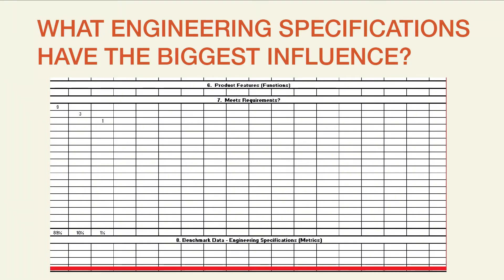There's an area in the House of Quality that's dedicated to including the specifications for your competitors' products, and that's called the benchmarking section. And to benchmark, we're going to do research on our competitors and find out how their products are comparing to ours.